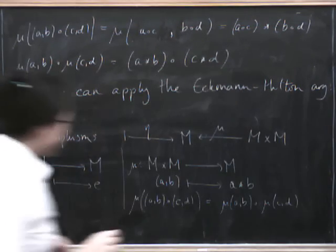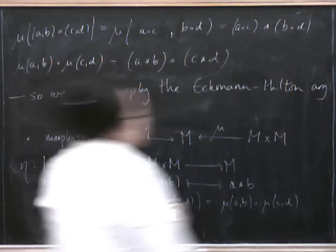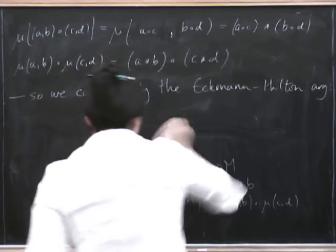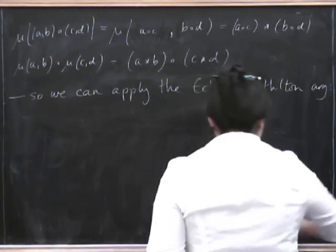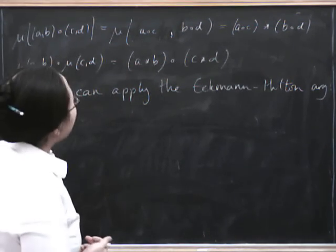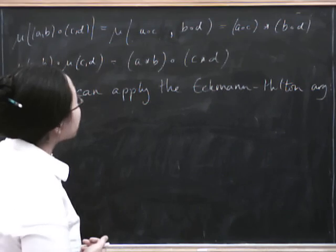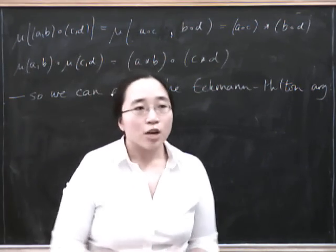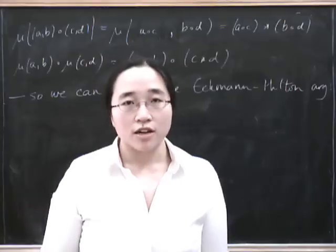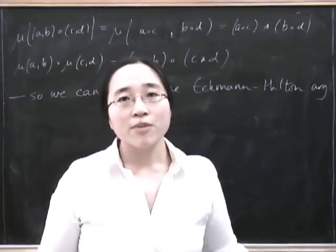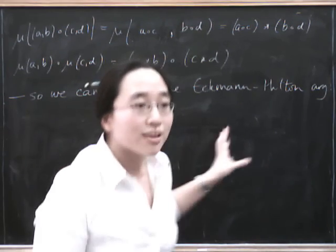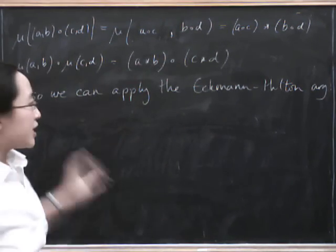So what about the unit and associativity conditions here? Well, what that tells us is that this mu is unital and associative. And in fact, we didn't have to impose that condition in order to be able to use the Eckmann-Hilton argument. Because as we showed last time, we can deduce it from the Eckmann-Hilton argument.